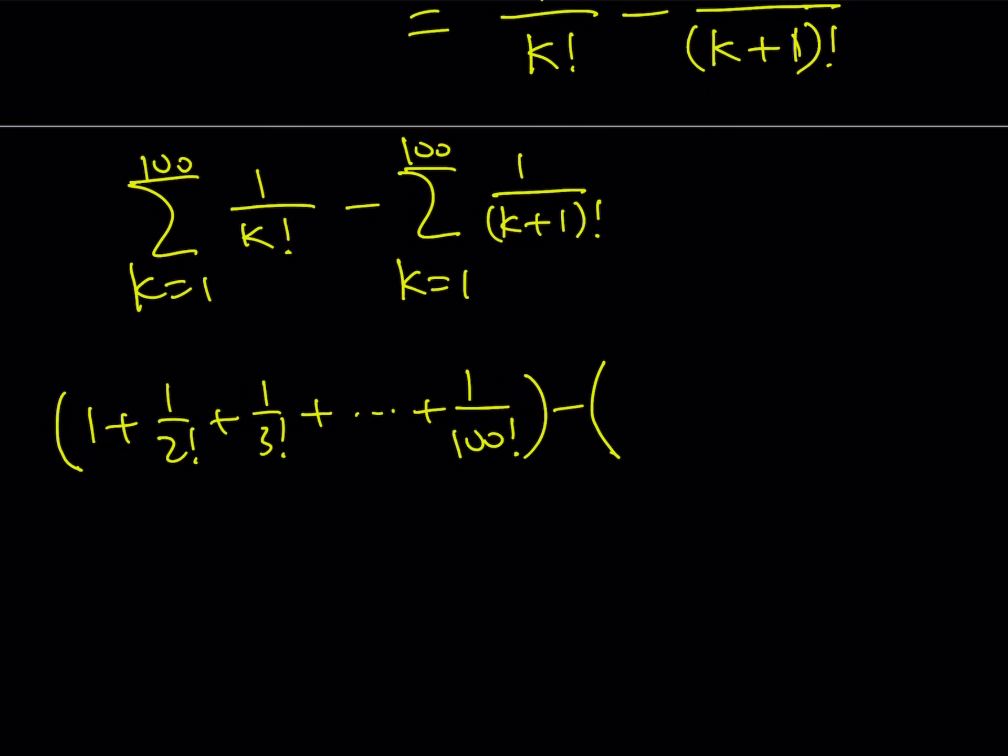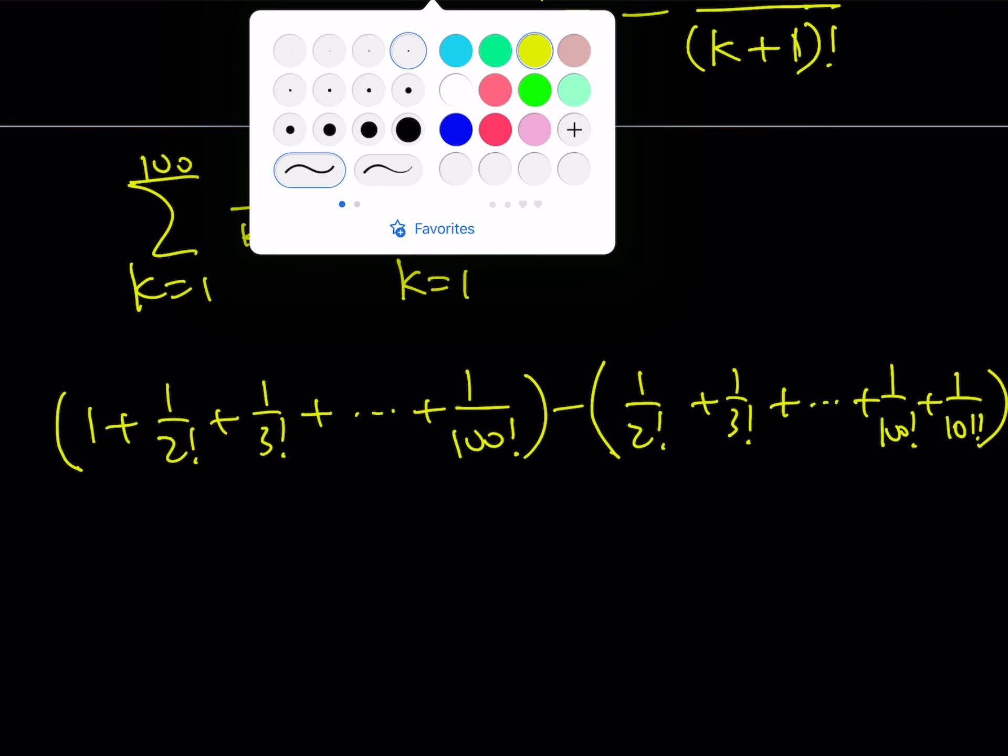And from this, I'm going to subtract the second sum, which is 1 over 2 factorial plus 1 over 3 factorial plus so on and so forth. All the way up to 1 over 100 factorial. And then we have the last term as 1 over 101 factorial. I wrote two terms so that you can see what cancels out easily.